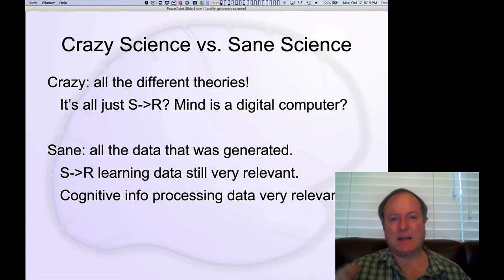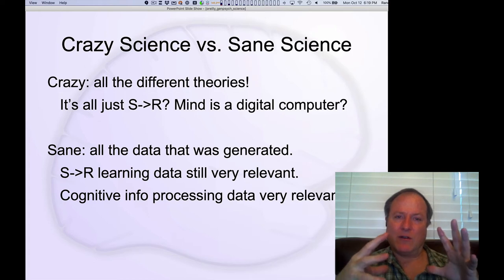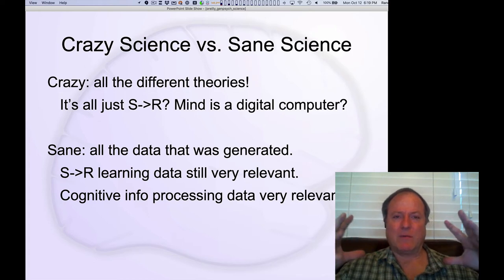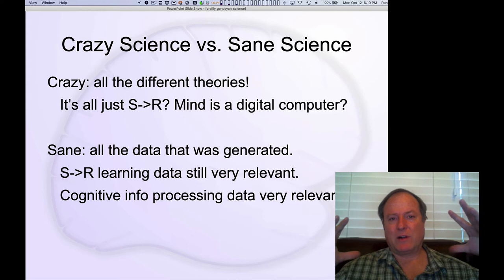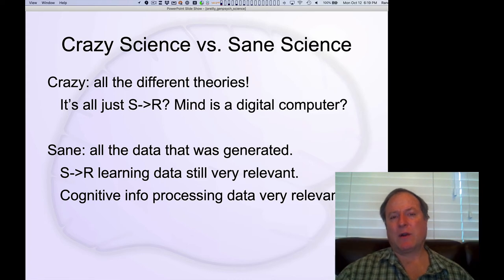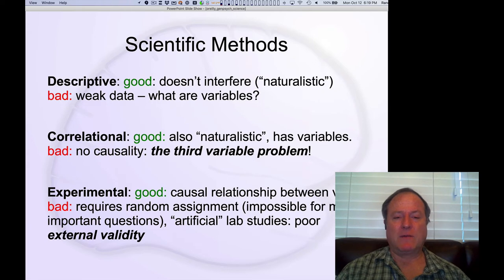And so this ends up being the understanding of how science progresses, that you end up having a very narrow perspective and then building up over time progressively broader, more comprehensive understanding of the objective world. So finally, we're going to look at the specific methods that are used in psychology and neuroscience today.